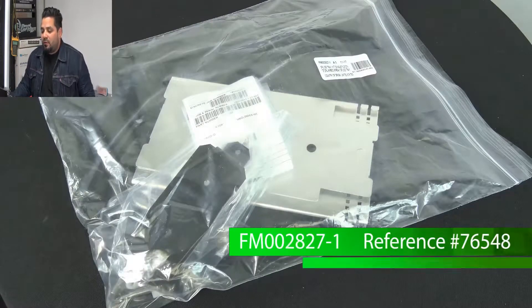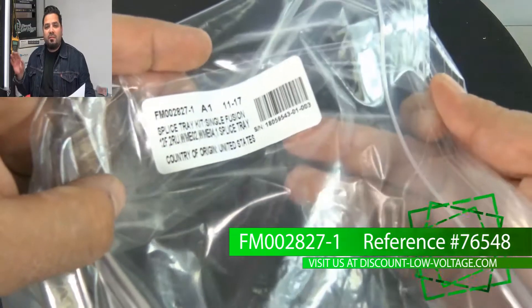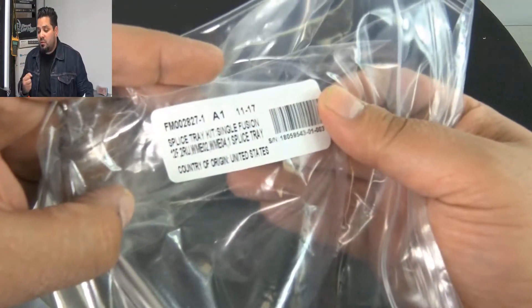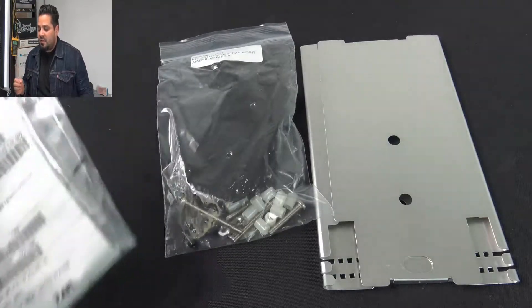Hey what's up guys, this is AFL's part number FM002827-1. This is a fusion splice tray, and there's the country of origin, United States.